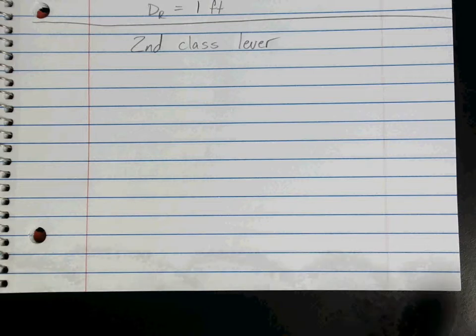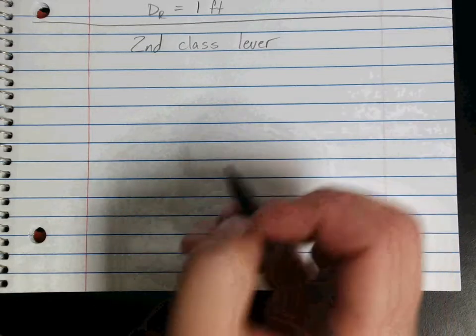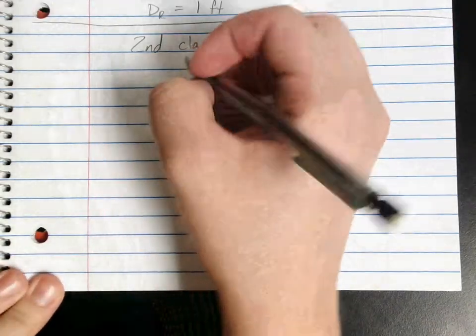This is going to be an example for second class levers, just to go through some basic calculations that we can do for those types of levers. Remember our second class of lever has the resistance in the middle, so a really good example is a wheelbarrow, and that's usually the ones that are used in any questions.